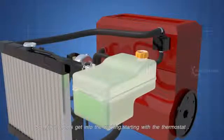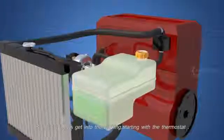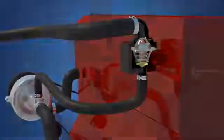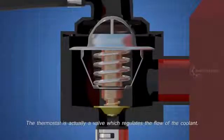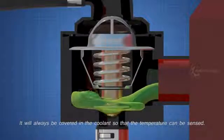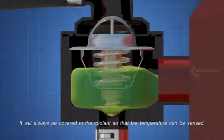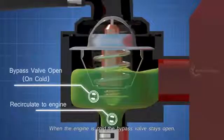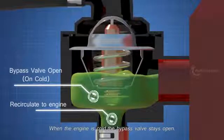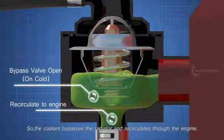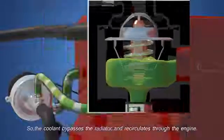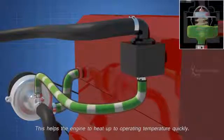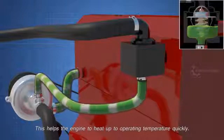So finally, let's get into the working, starting with the thermostat. The thermostat is actually a valve which regulates the flow of the coolant. It will always be covered in the coolant so that the temperature can be sensed. Let's start the operation from a cold engine. When the engine is cold, the bypass valve stays open. So the coolant bypasses the radiator and recirculates through the engine. This helps the engine to heat up to operating temperature quickly.